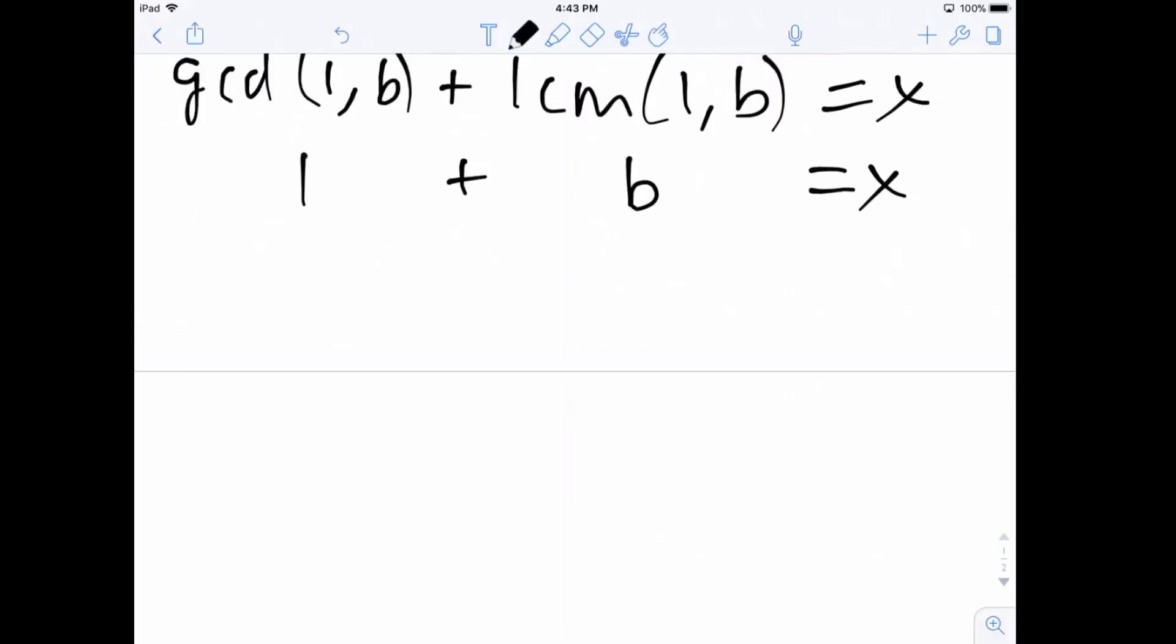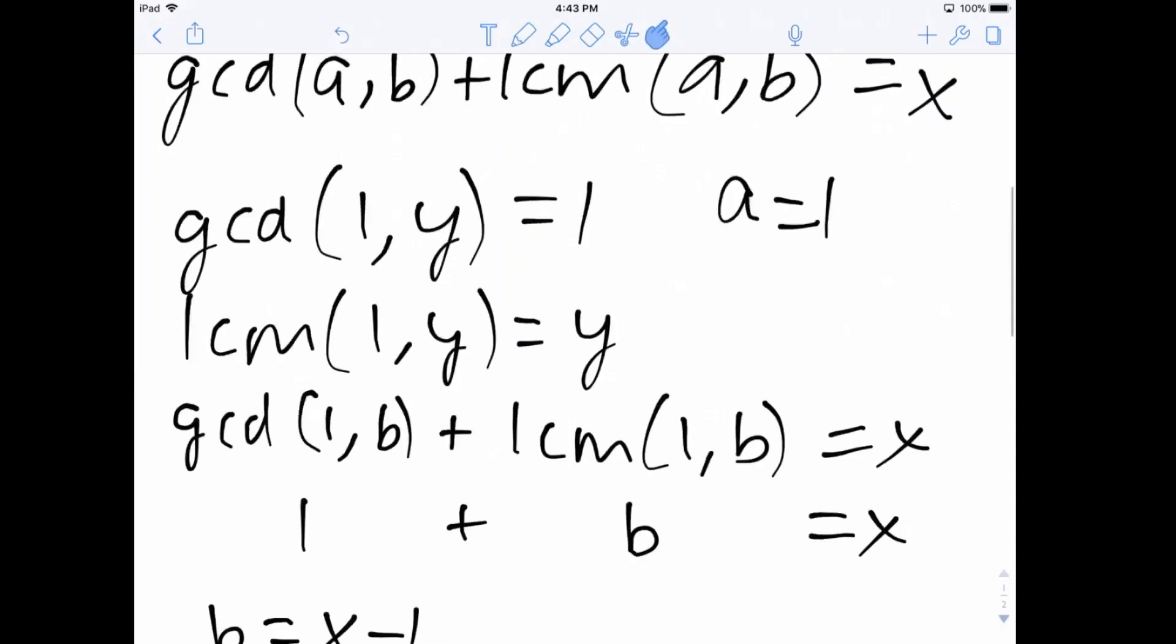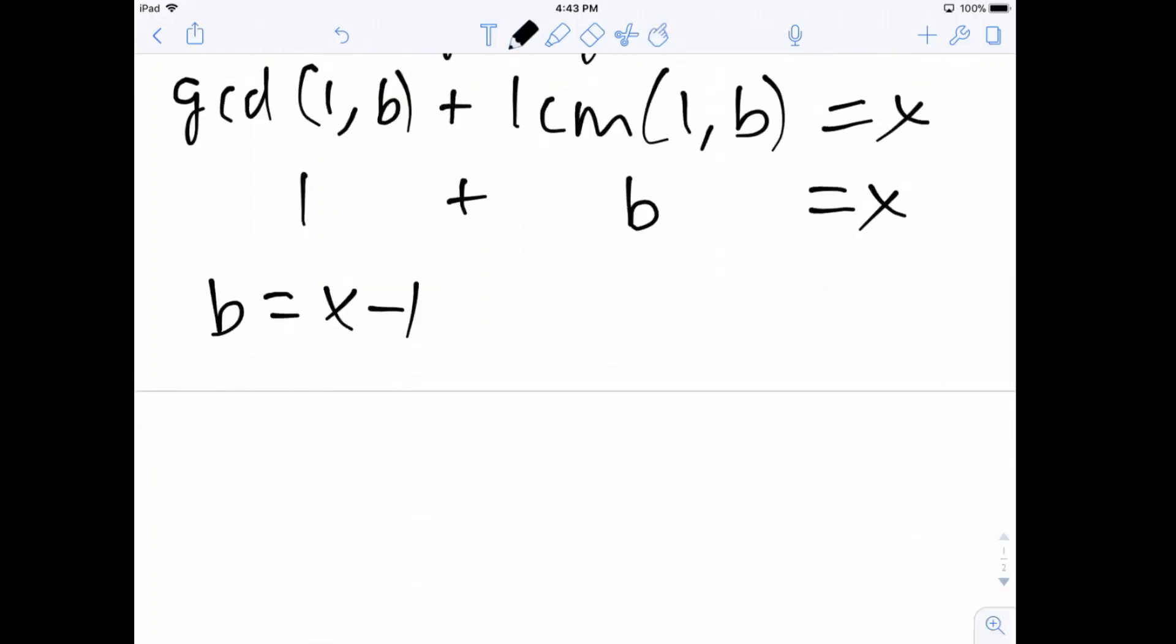Solving for B here, we get B equals x minus one. And we know from above that A equals one. So we have B equals x minus one, and we have A equals one, and this is our solution.